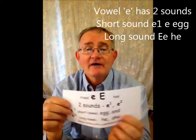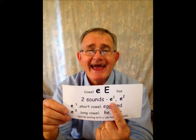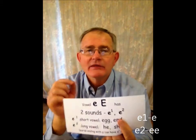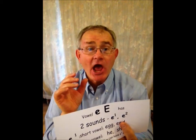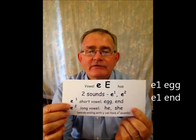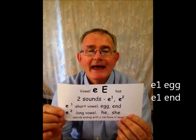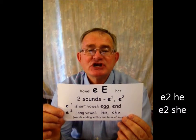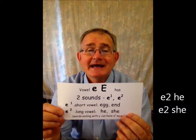Short and long. Vowel E — the short sound is E. See my mouth? E. E is a short vowel, like E — egg. E — end. And the long sound E — he. E — she. He and she, that's the long sound.